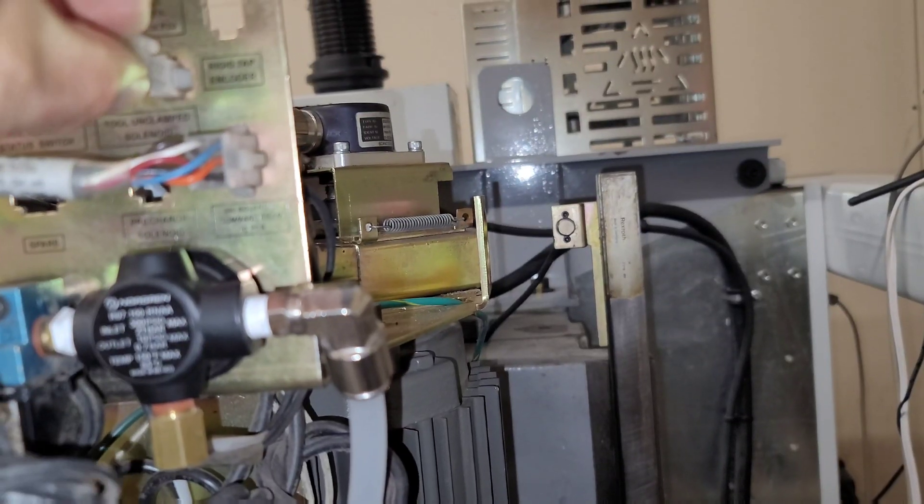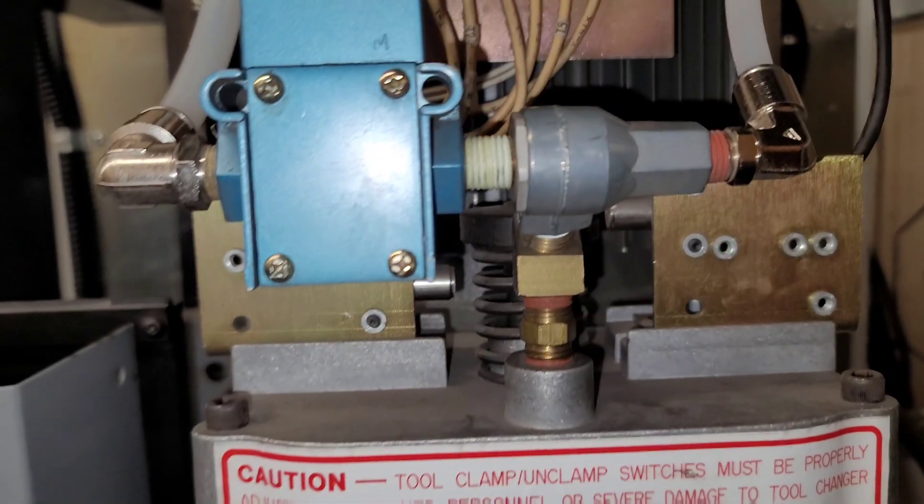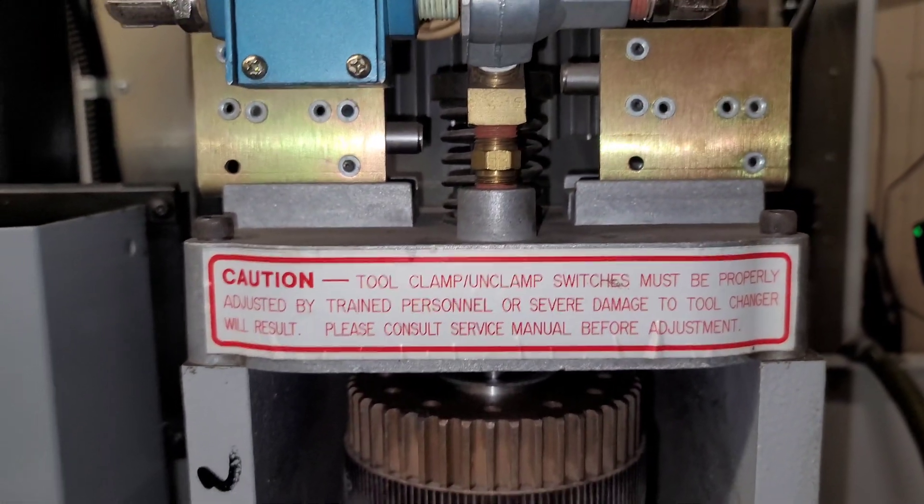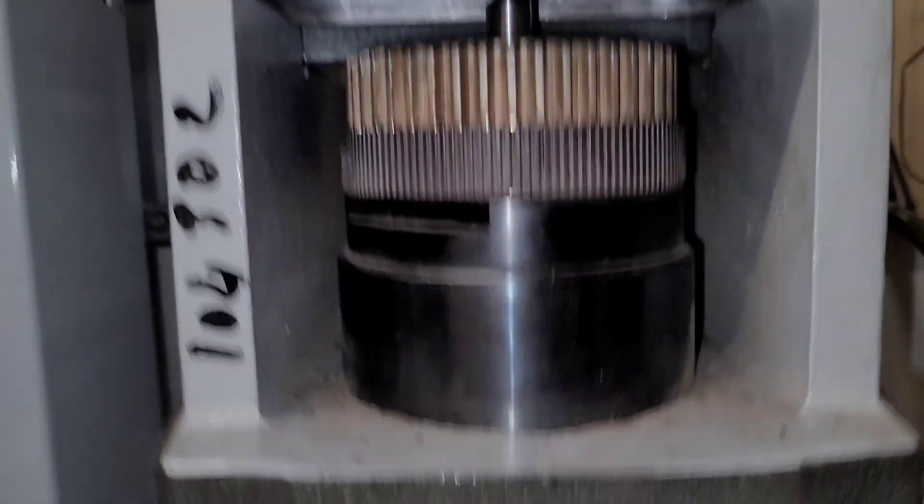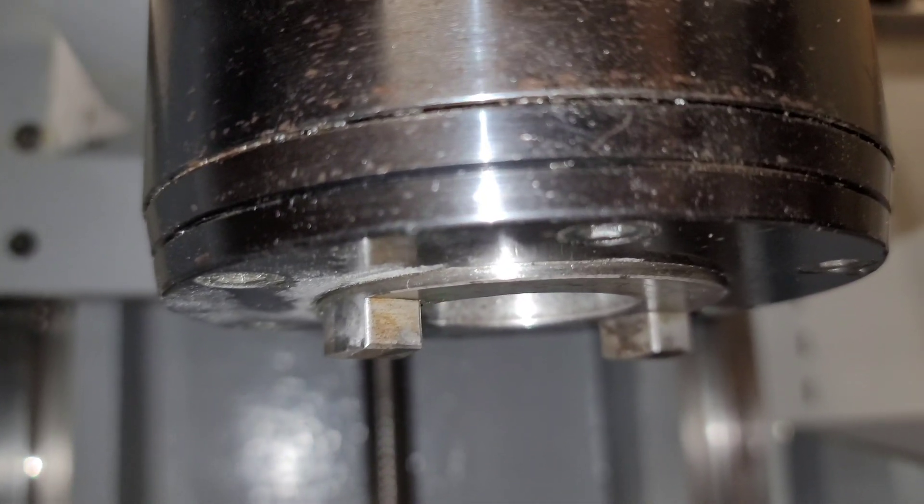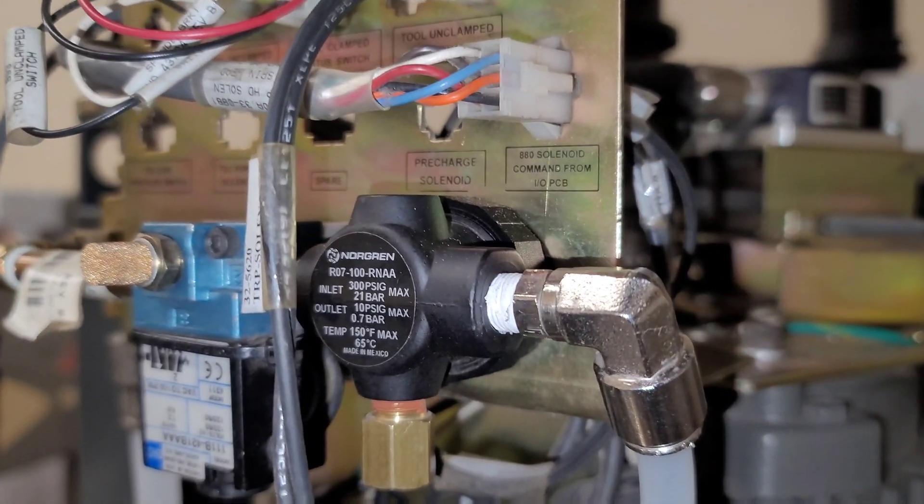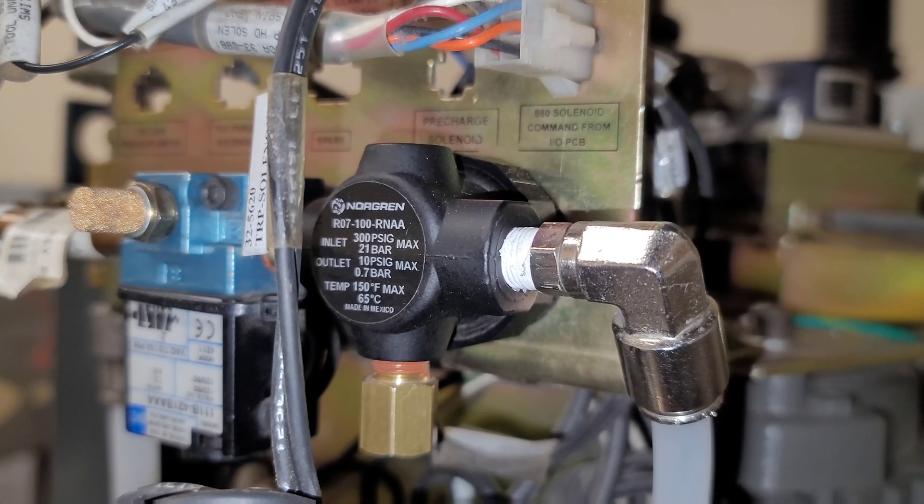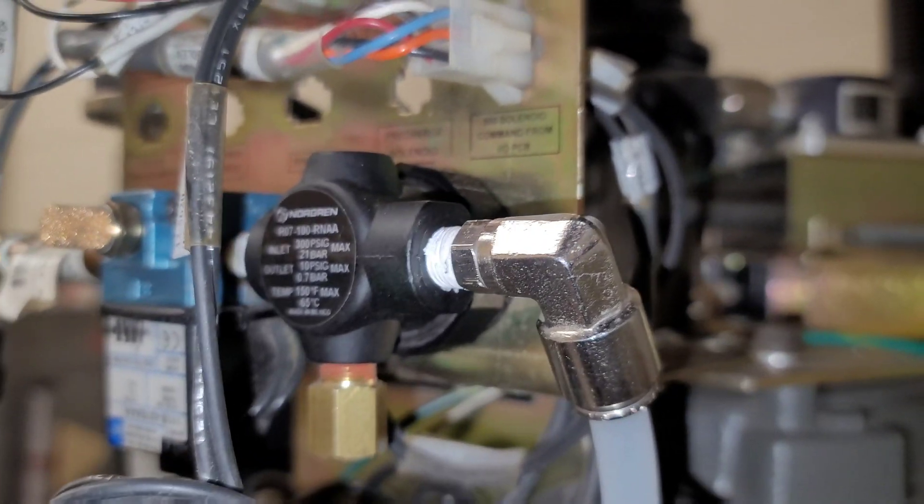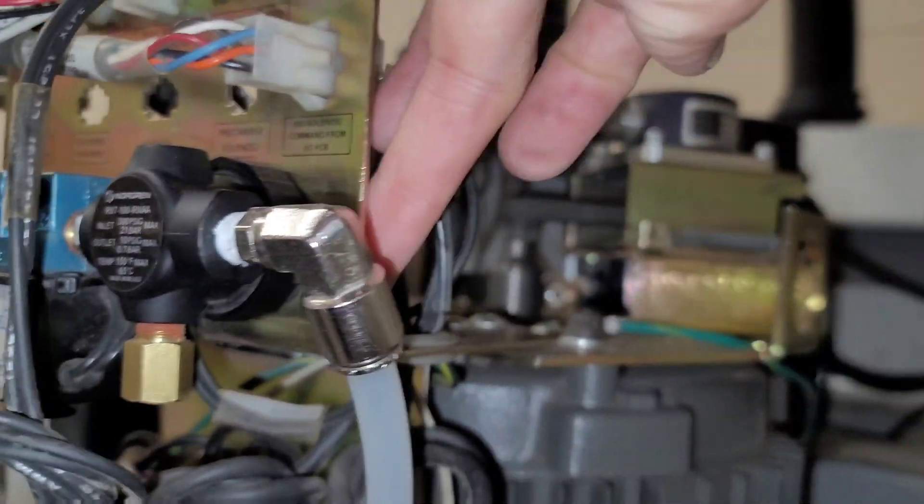But now if I plug in the tool unclamped solenoid and I push the tool release, you're going to hear a lot of air leaking. So it's not just coming out of the bottom of the spindle as some of it should. A lot of it's also coming out of this pressure regulator and that shouldn't be happening.